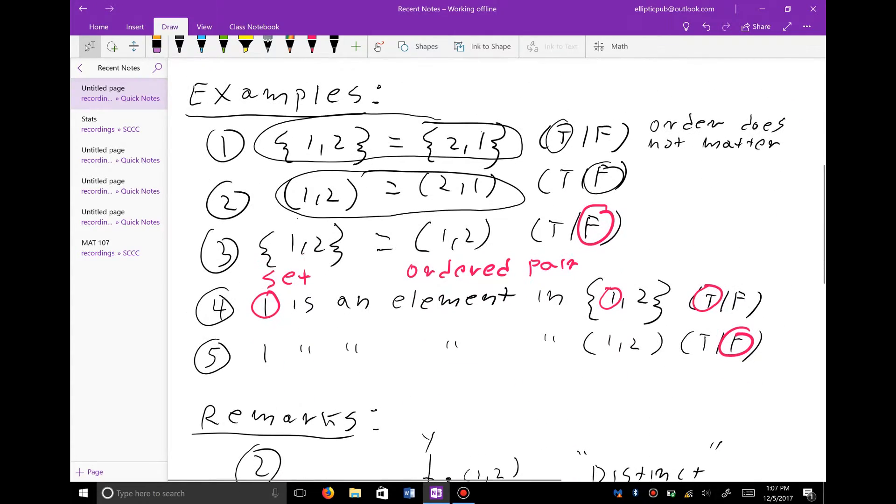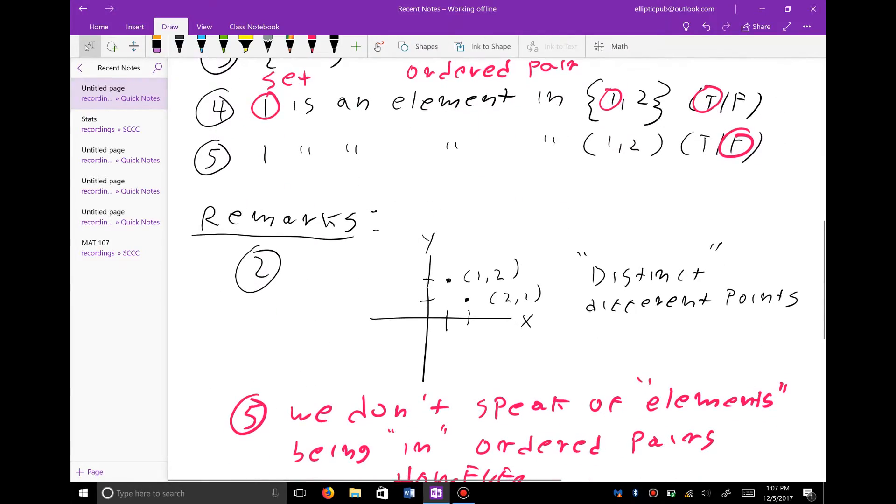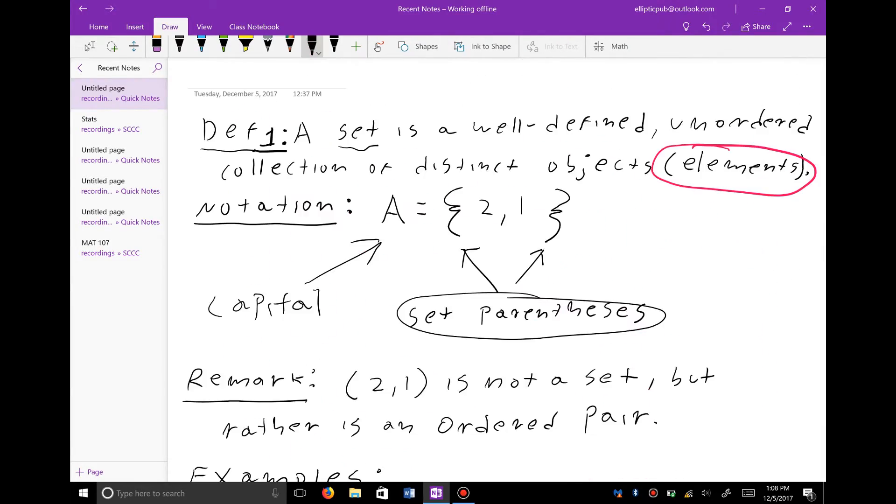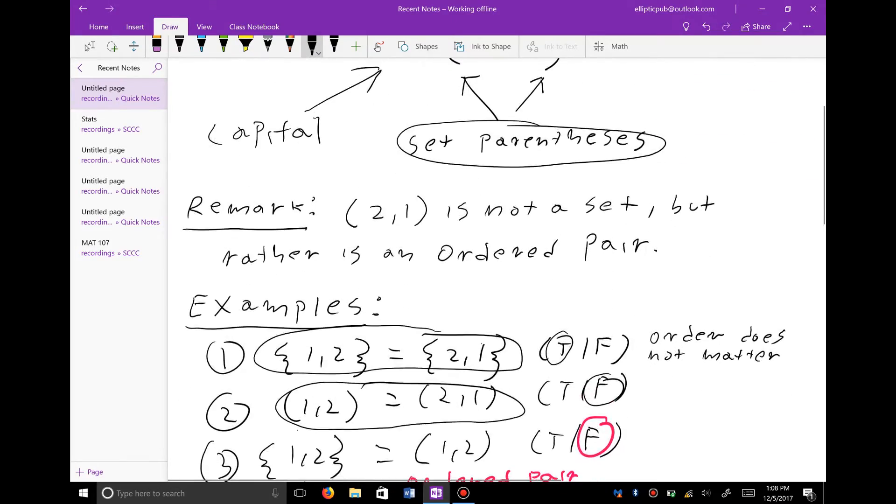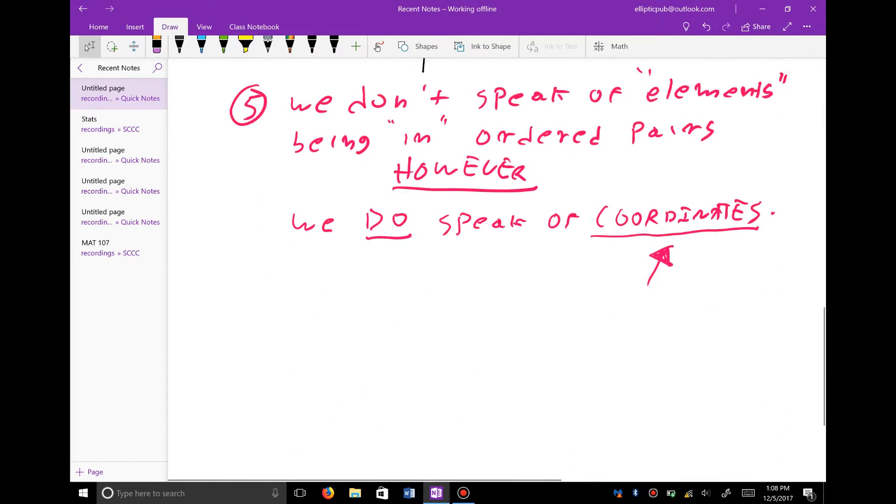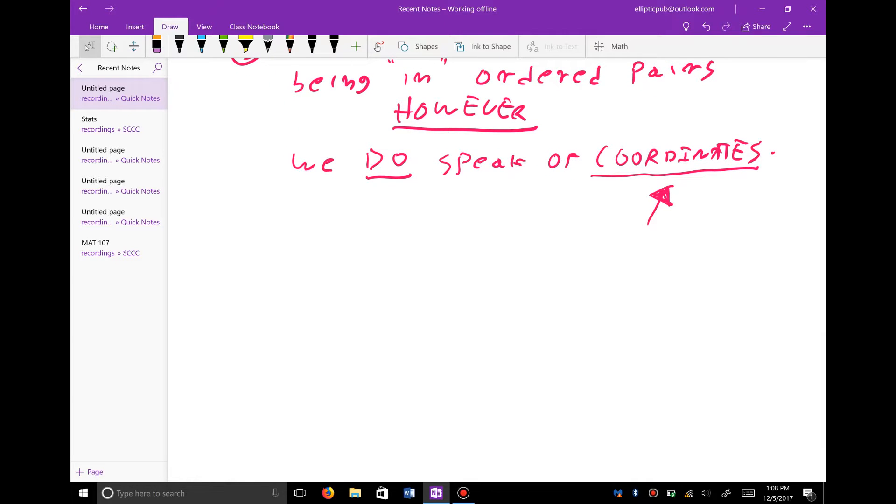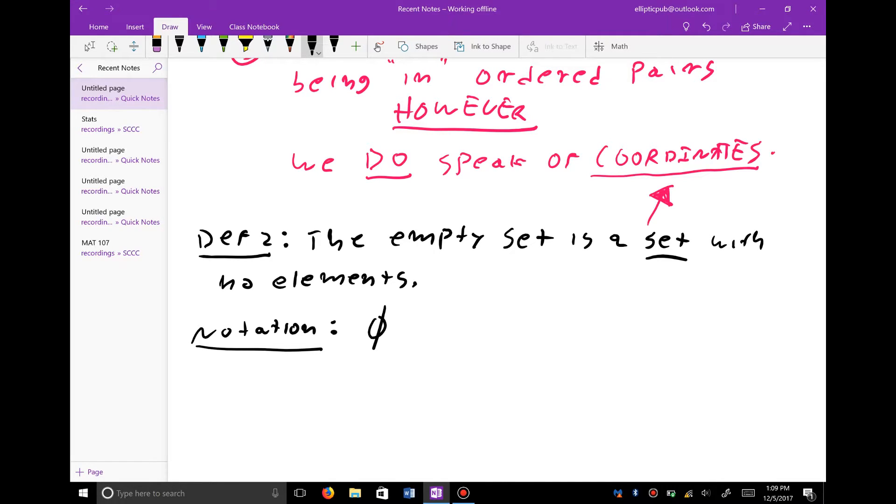So we've done some basic examples about sets. I want to give you another definition that's important. So definition one is what a set is. Definition two, I want to tell you what an empty set is. The empty set is a set with no elements. I want to give you some notation. Phi, this is a Greek letter phi. Or simply a set with no elements is called the empty set.